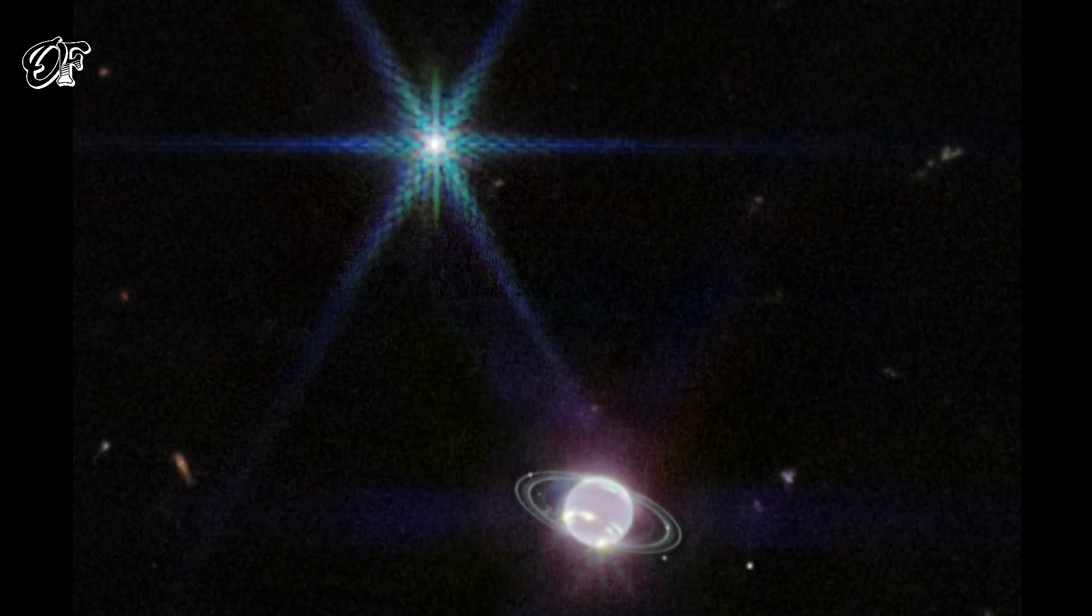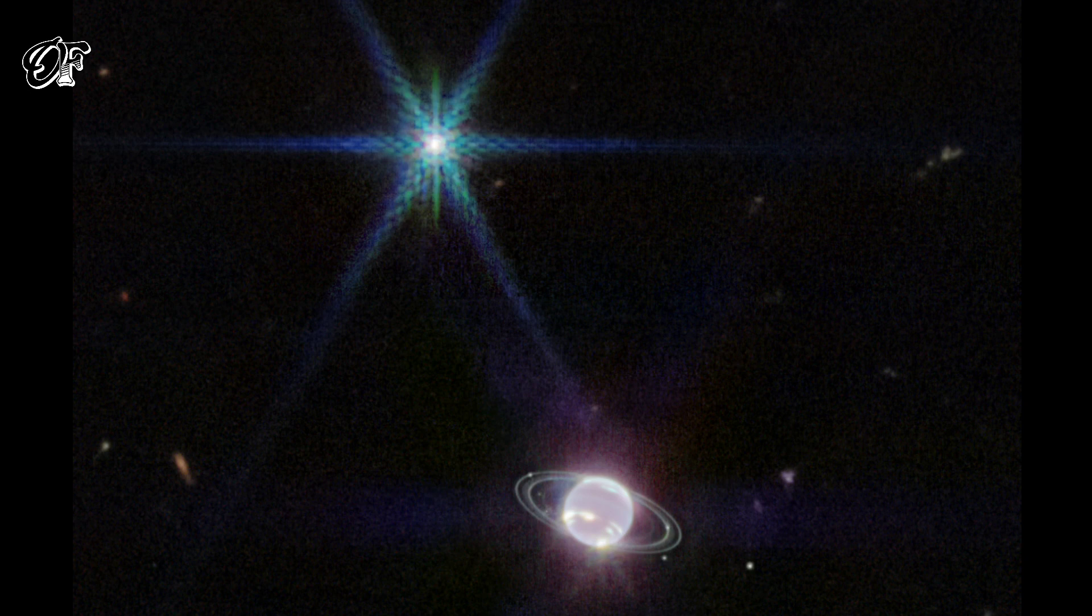Ringed ice giant Neptune lies near the center of this sharp near-infrared image from the James Webb Space Telescope. The dim and distant world is the farthest planet from the Sun, about 30 times farther away than planet Earth.